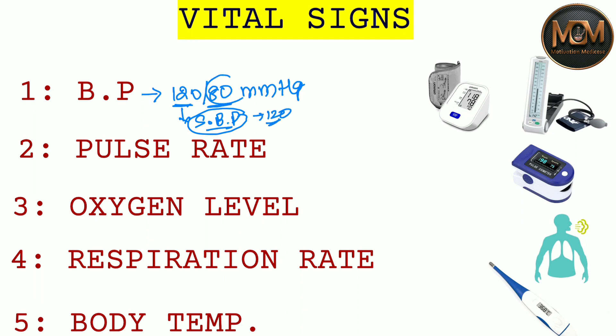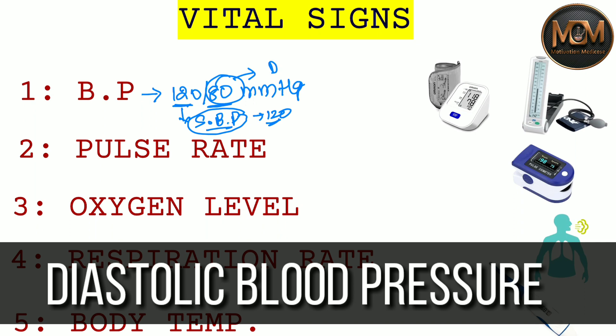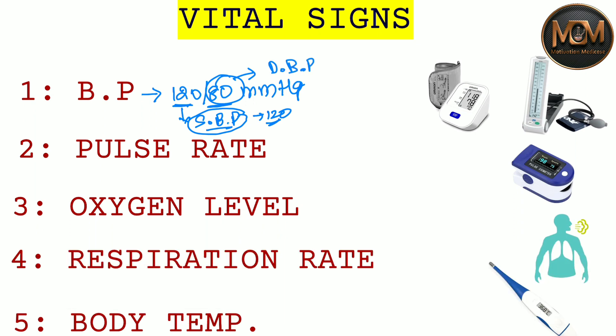Now let's understand about the 80. When the heart relaxes after contraction, the BP falls and blood fills the heart. At that time, the pressure being exerted is said to be the diastolic blood pressure. So these two — systolic and diastolic — together make up the blood pressure.